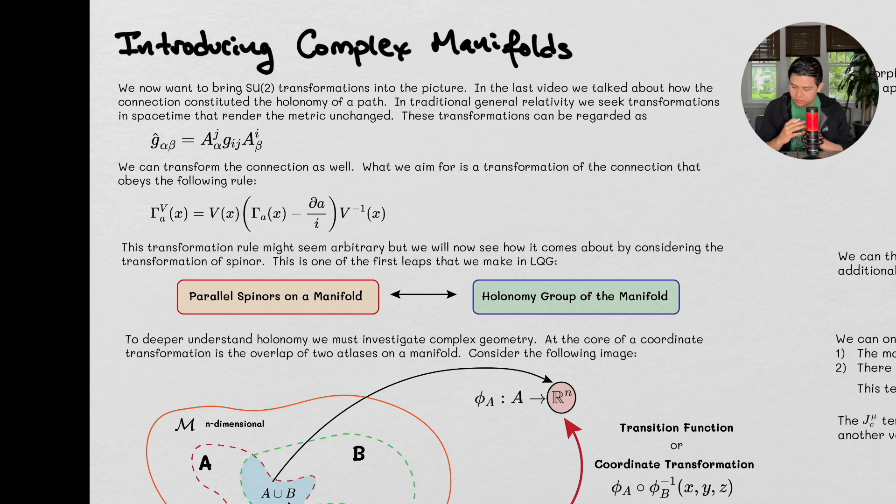In the last video we talked about how the connection constituted the holonomy of a patch, and in traditional general relativity, we see transformations in space-time that render a metric unchanged. These transformations can be regarded in this way here, as I've listed.